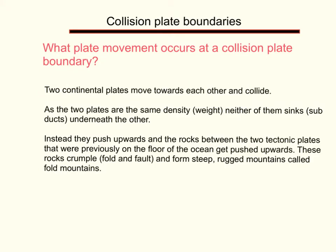The first question to focus on is what plate movement occurs at a collision plate boundary. Two continental plates move toward each other and collide. As the two plates are the same density or weight, neither of them subducts or sinks underneath the other. Instead, they push upwards into each other, and the rocks between the two tectonic plates that were previously on the ocean floor get pushed upwards.